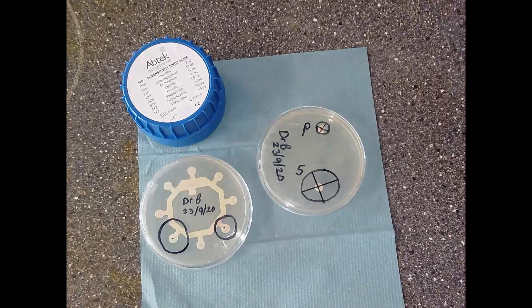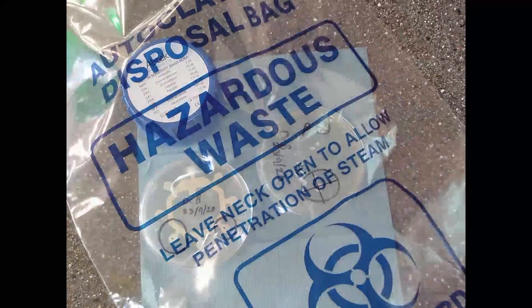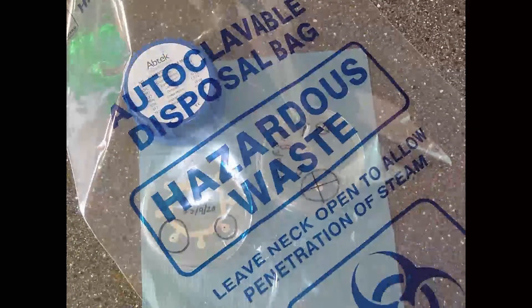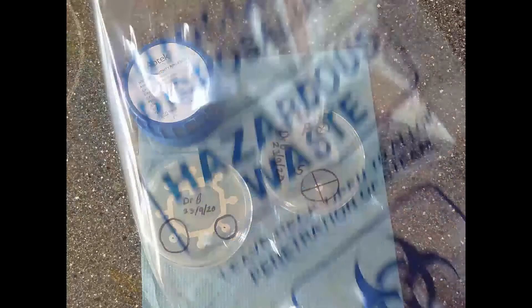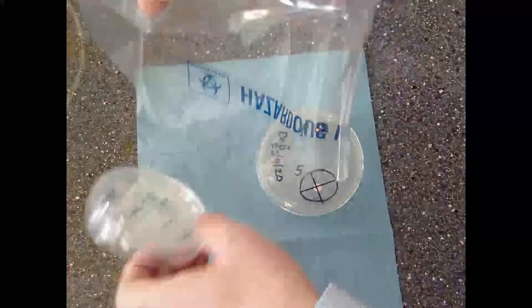Last thing I need to do - what I have here is an autoclave bag. This is to dispose of the petri dishes safely. I don't open them, I don't expose the bacteria. I'm going to place them very carefully into a bag. One, two, three. I've placed them in the bags and we are going to seal those up. They will be autoclaved. An autoclave basically uses steam under high pressure.